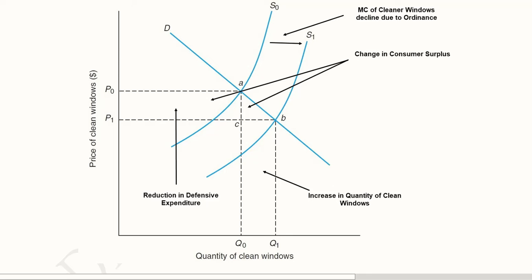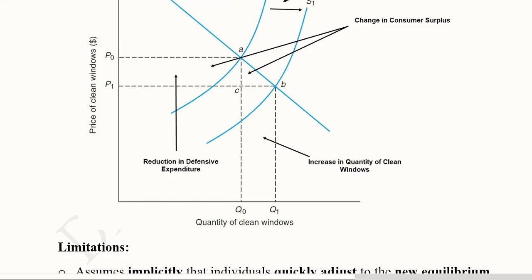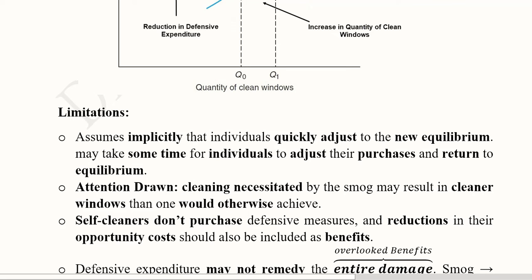And this is possible because of the lesser cost of having clean windows and the greater number of clean windows that are now available due to the ordinance. So this is the reduction in the defensive expenditure due to decline in the cost or the price that they have to pay. And this is the change in the number of clean windows that has happened due to the ordinance, which is actually the marginal cost of providing the cleaner windows, and that has now declined. So in this way, we can assess the effect of the policy which has actually declined the level of smog, and there are positive effects of that on the negative externality of the smog.